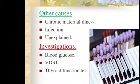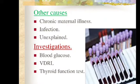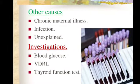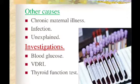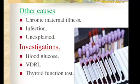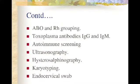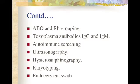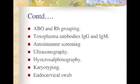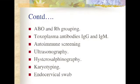Other causes include chronic maternal illness, infection, and unexplained causes. Investigations include blood glucose, VDRL, thyroid function test, blood grouping, toxoplasma antibodies IgG and IgM, autoimmune screening, ultrasonography, hysterosalpingography, karyotyping, and endocervical swab to detect the cause of recurrent abortion.